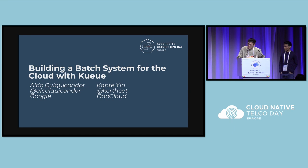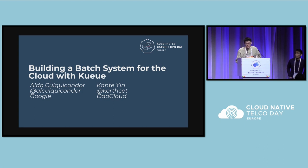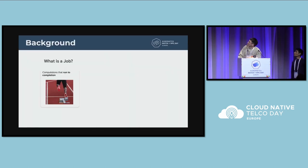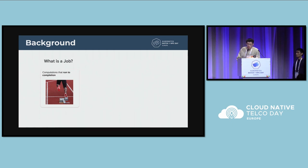Today we'd like to talk about building a batch system in cloud with Kueue. Before we talk about Kueue, let's mention a bit about what a job is. It may be a little funny to talk about this on batch day, but just in case we have some newcomers who are interested. So what's the job? Jobs run to completion. Different from long-running workloads like deployments and stateful sets, which restart pods when they fail, jobs run to completion.